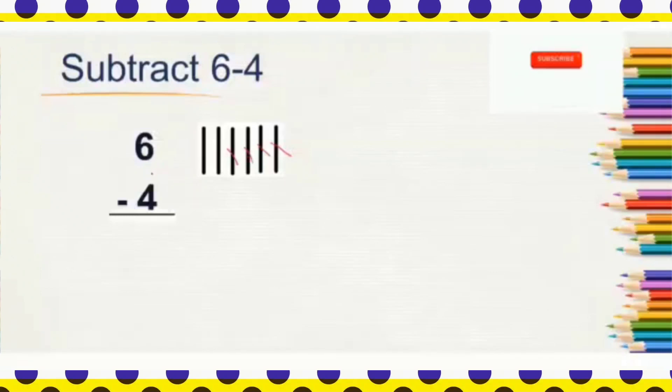From 6 lines, if we take away 4 lines, how many lines will be left? 1, 2. So, the difference of 6 minus 4 is 2.